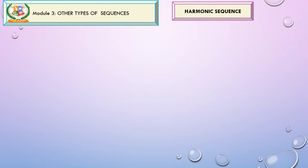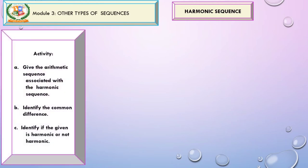Let us now identify if the given is a harmonic sequence or not a harmonic sequence. In order for us to identify, we will follow these given steps. For our first example, look at the given and let us try to identify if the given is harmonic or not following steps A to C.